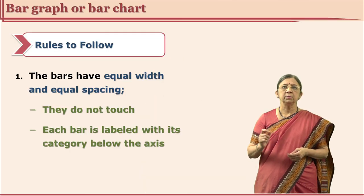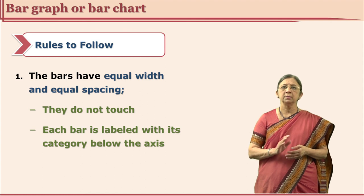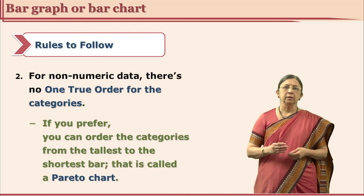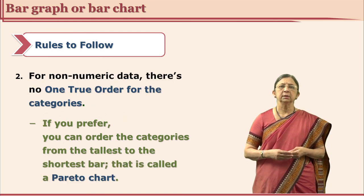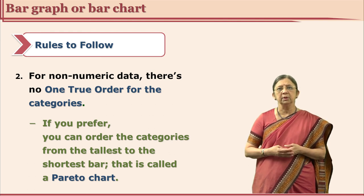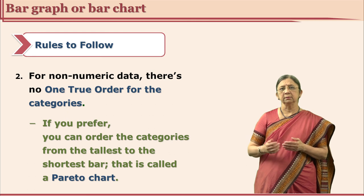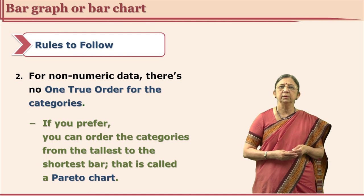There are certain rules which we must follow while using a bar graph or bar chart. The width of each bar is the same, meaning the area covered has equal width. The bars are at equal distance from each other — this is different from a histogram where bars touch each other. In a bar graph, bars do not touch each other; they are equidistant. If your data is non-numerical, there is no sequence, so you can arrange the bars in any order. If you arrange them in sequence using some condition, the chart is known as a Pareto chart.